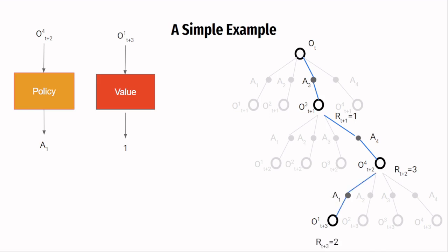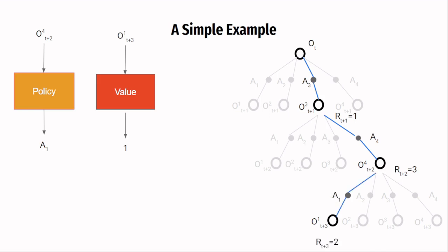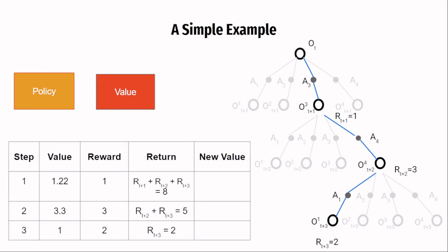Once it has all the rewards, it can now accurately calculate the return for every observation. Every time it finds the value to be a little off than the actual return, the agent updates the value function accordingly. The agent continues to sample trajectories and keeps learning the values and the policy. This is the fundamental principle of reinforcement learning.